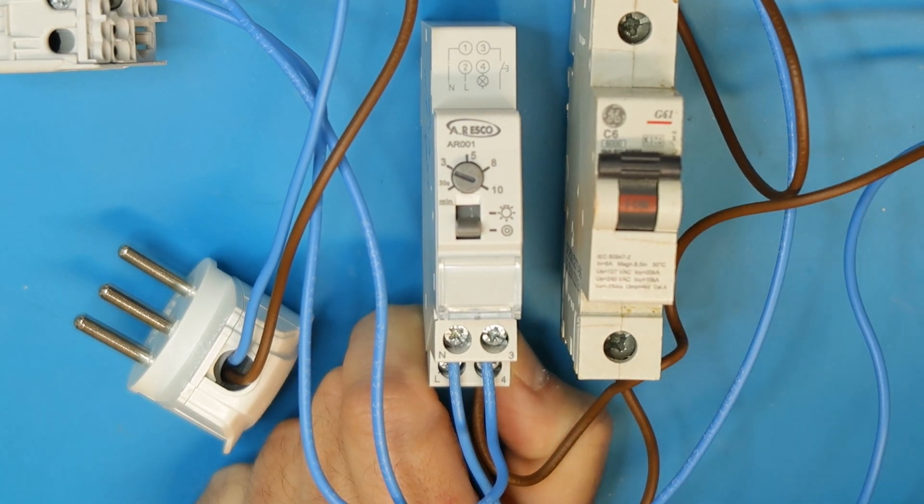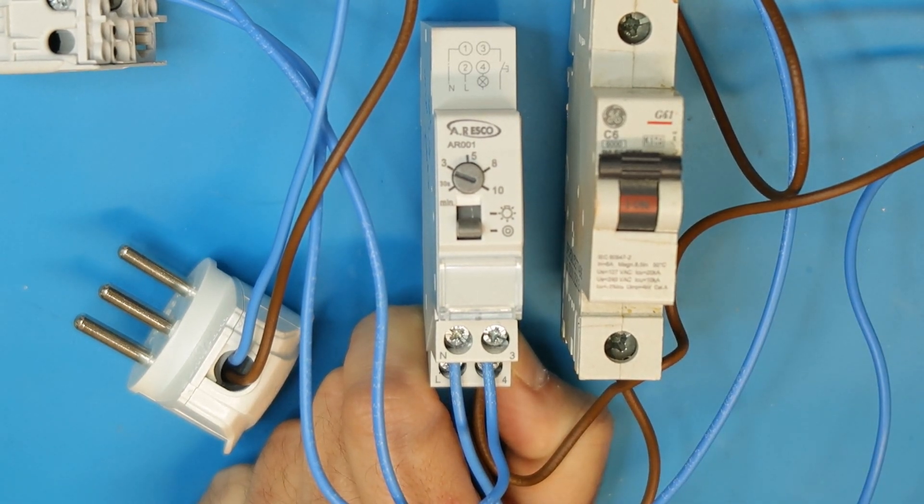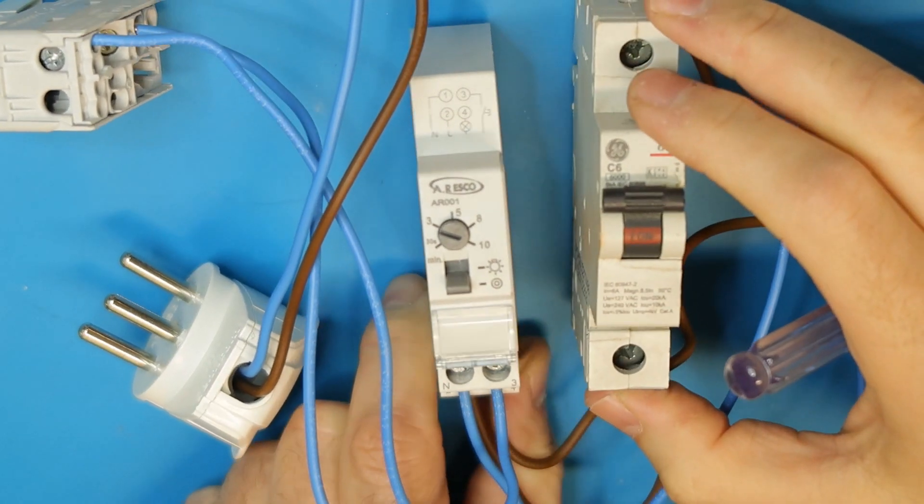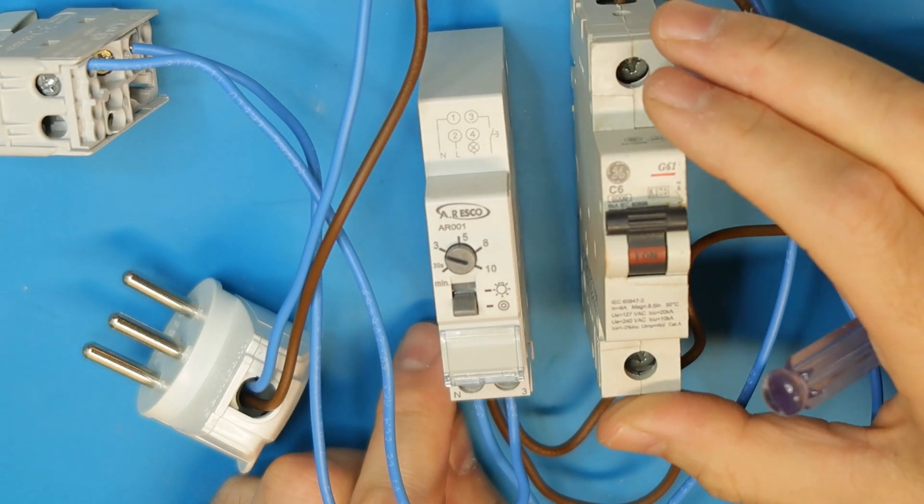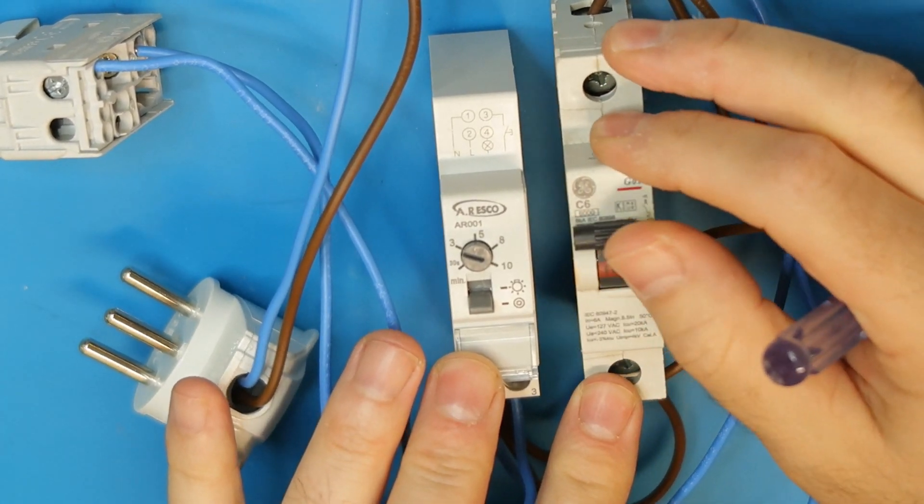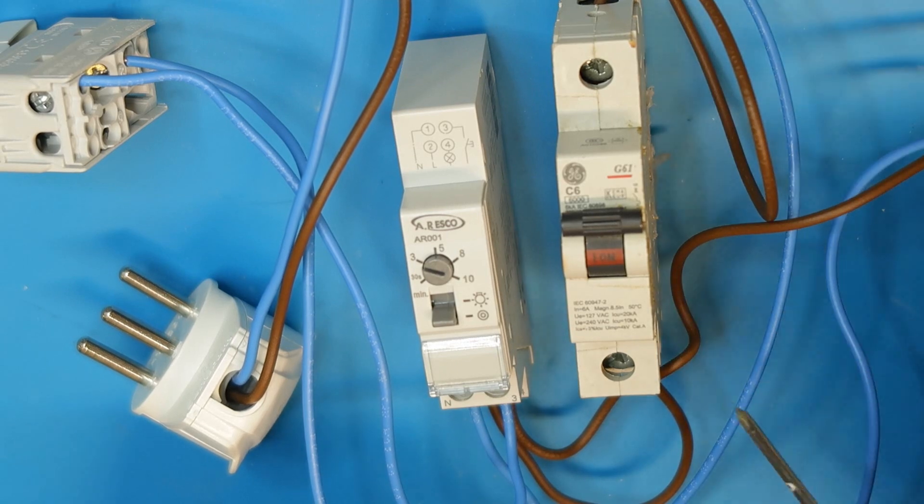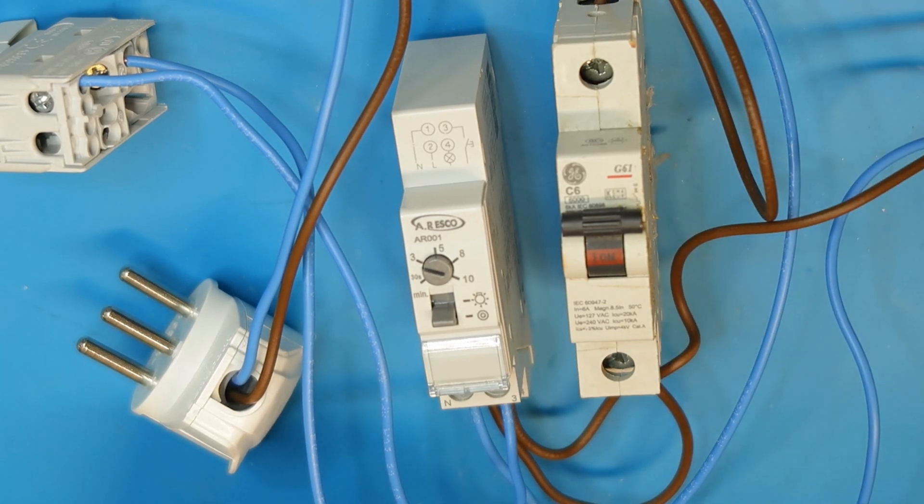Then you have three and four - one of them is the command and one of them is the phase out for the lighting. In order to test this, I put a circuit breaker before.